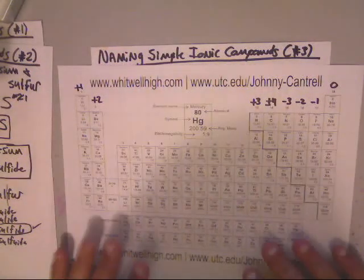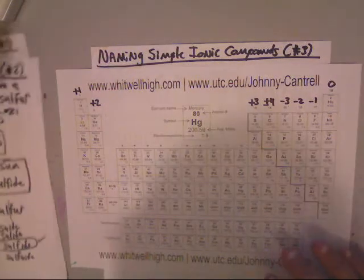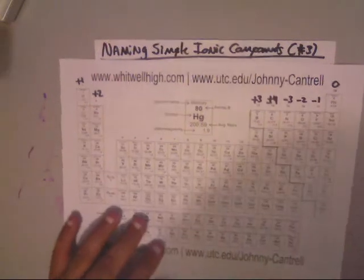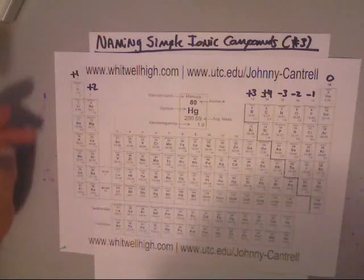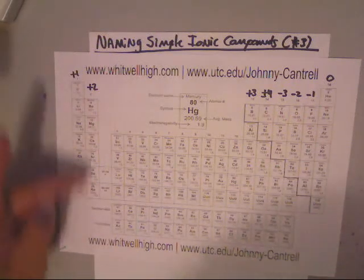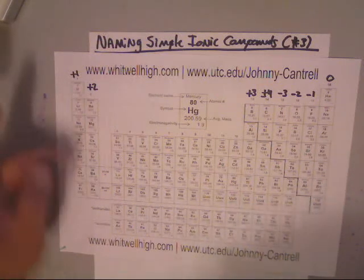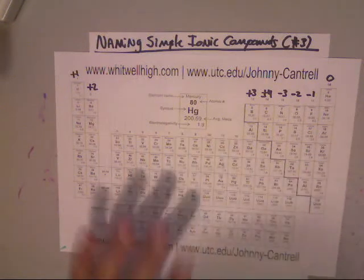We're ready for our third video on naming simple ionic compounds. Simple ionic compounds are our basic salts, which is our first two columns in the periodic table — the alkali metals and alkaline earth metals — and some non-metals. That's simple ionic compounds.